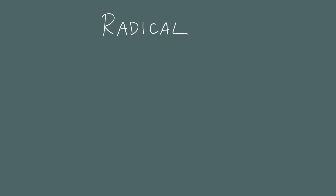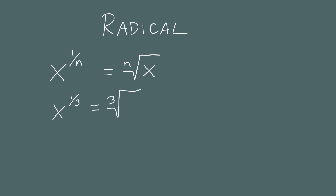We're now ready to give the general definition of a radical. If you take some number x and raise it to the 1 over nth power, you can write this using the radical symbol with n on top of the flat part and x inside. So x to the 1 over 3 can be written as the 3rd radical of x, x to the 1 fifth as the 5th radical of x, and x to the 1 over 9 as the 9th radical of x.